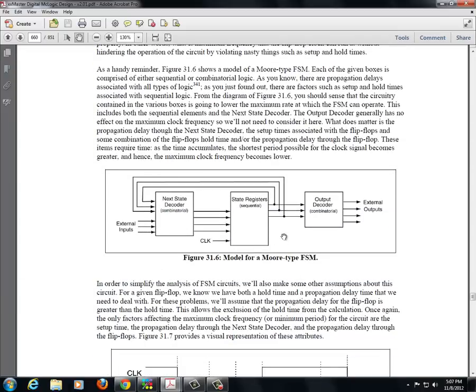Okay, so remember this is a model for a Moore-type finite state machine where we have the next state decoder logic, which is combinatorial logic. And remember that all of our gates have a propagation delay. So the state registers are flip-flops. So these flip-flops are going to have setup times and hold times and they're also going to have propagation delays because state registers or flip-flops are made out of gates and the gates within the flip-flop also have delays.